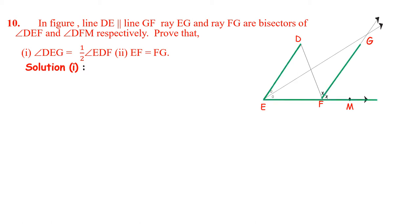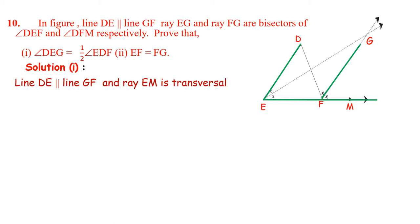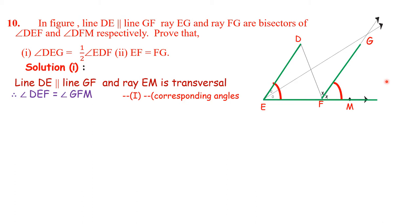DE is parallel to GF and EM is a transversal. Therefore, these two angles are equal — corresponding angles. Therefore, angle DEF is equal to angle GFM. This is statement number 1: corresponding angles.